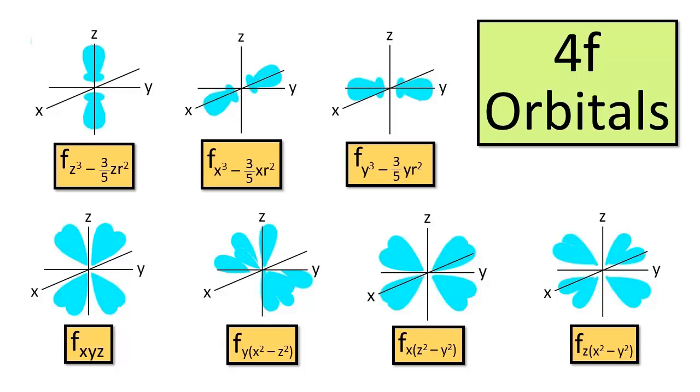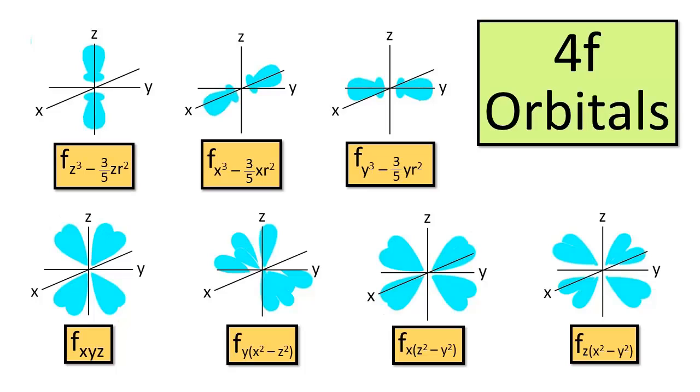By now you can probably see the pattern: as the azimuthal quantum number increases from 0 to 1 to 2 to 3 — in other words s orbitals, p orbitals, d orbitals, and f orbitals — we get more and more complicated orbitals that have progressively more lobes and progressively more nodes. Now these f orbitals are very poorly drawn due to the limitations of my software, so I suggest you check out your chemistry textbook to see what they really look like.